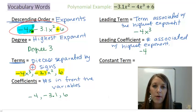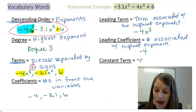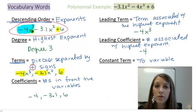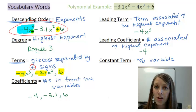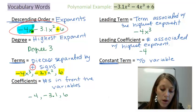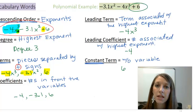The last vocabulary word is constant term. It's the term without a variable attached to it. Think about the wording: variables means something's going to vary, so which term isn't going to vary — which one remains constant? That is the one without a variable. In our example, our constant term is 6, because it is the term that does not have any variable associated with it.